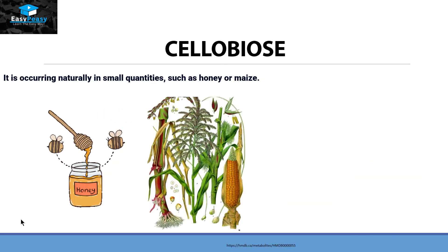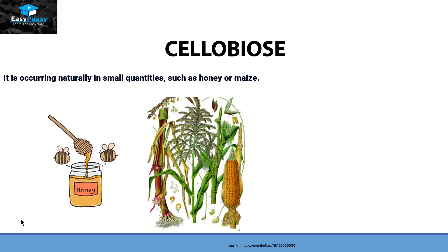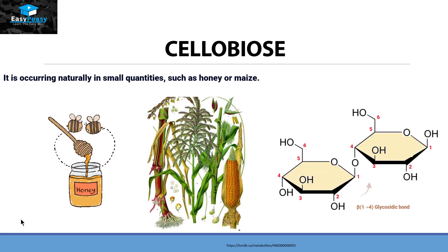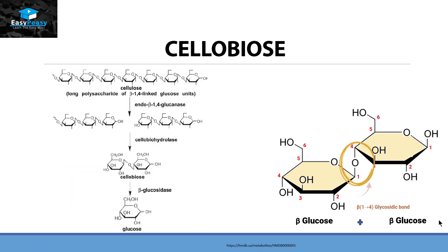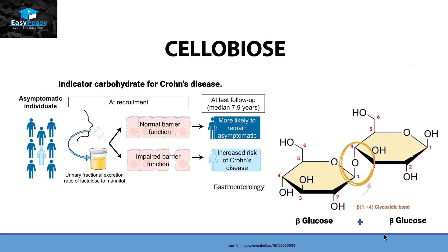The next disaccharide is cellobiose. Cellobiose is a naturally occurring disaccharide present in very small quantities in honey or maize. Its structure is made up of two beta-glucose units, and the bond they form is a beta-1,4 glycosidic bond. Cellobiose is generated by the degradation of cellulose, a polysaccharide — so cellulose degrades into cellobiose, and cellobiose can further degrade into glucose. Cellobiose is used as an indicator carbohydrate for Crohn's disease.